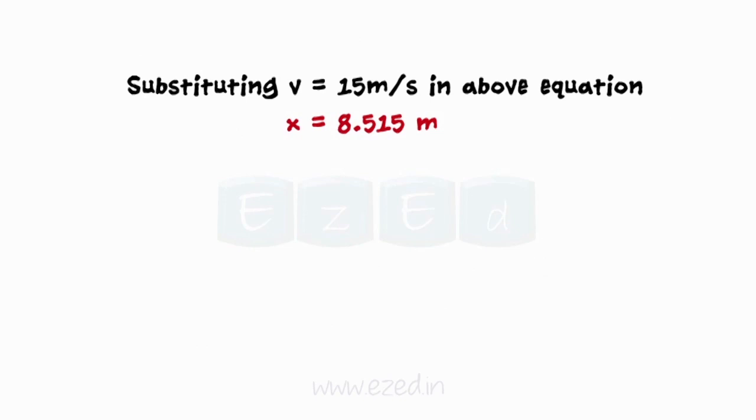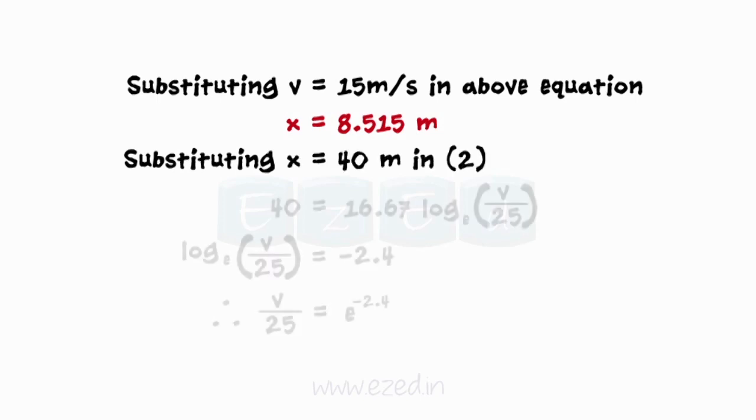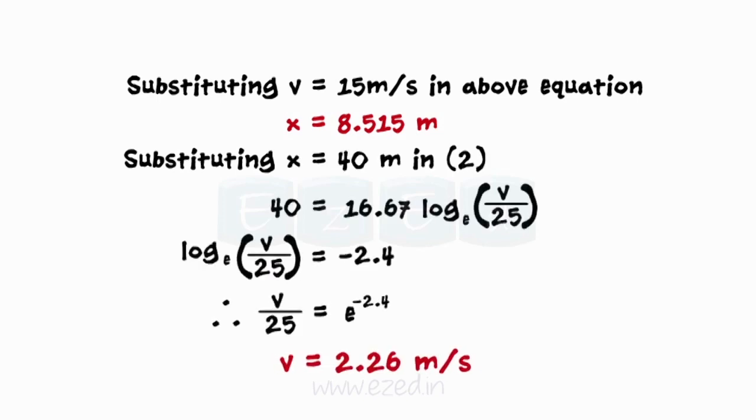Now we will find the acceleration of the particle at x = 40 meters. Substituting x = 40 meters in equation 2, we get the velocity of the particle.